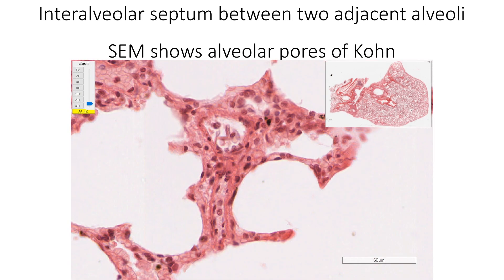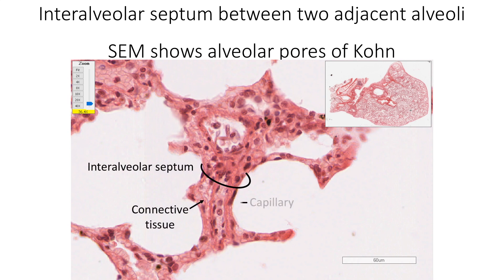The air spaces of two adjacent alveoli are separated by an interalveolar septum, which is made up of connective tissue containing capillaries and macrophages between the two layers of alveolar epithelia. Scanning electron microscopy has shown the presence of alveolar pores in the interalveolar septum, which allows for air circulation between adjacent alveoli even if there is obstruction of the airway in one of the alveoli.